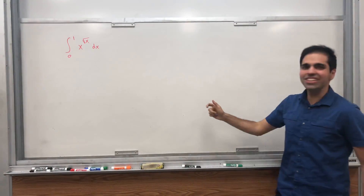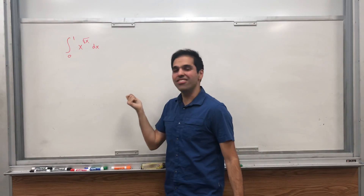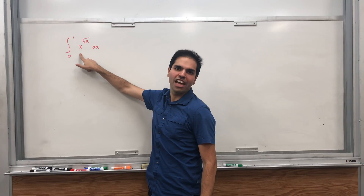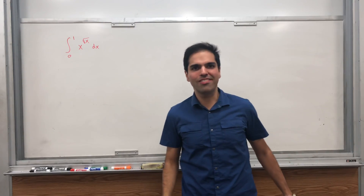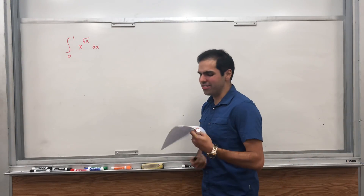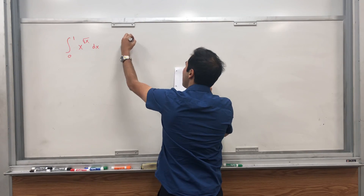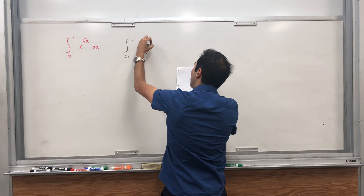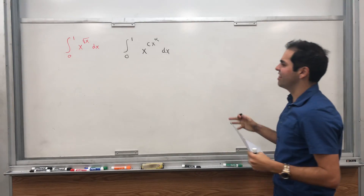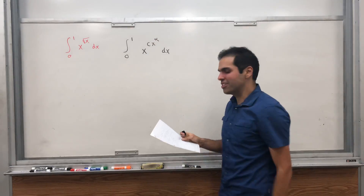All right, thanks for watching. Today, from the producer of the integral x to the x, comes another special where I evaluate not only the integral of x to the square root of x, but also the integral of square root of x to the x at the same time. So I'm literally killing two birds with one stone. In fact, I'm going to do the most general case: the integral from zero to one of x to the alpha times c, x to the alpha dx. And the nice thing is the proof is almost exactly the same — you just have to add a bunch of constants.